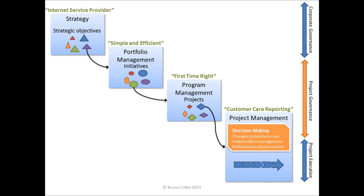We see very clearly that project governance helps to bridge the gap between the strategic objectives and the execution of the project. We also see the duality of doing the right things, which is the focus of project governance, and doing things right, which is more the focus of project execution. Of course, there is a kind of grey zone between these two topics.